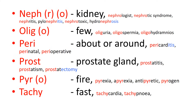Hydronephrosis — 'hydro' means water, here in practice meaning urine, 'neph' is the kidneys, 'osis' is condition of — is where urine dams back up into the kidneys. When the kidneys are waterlogged with urine over time it will cause renal failure.